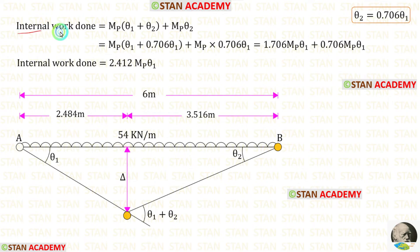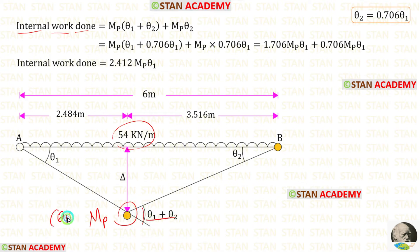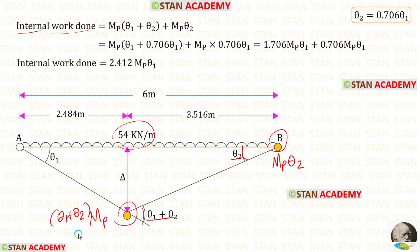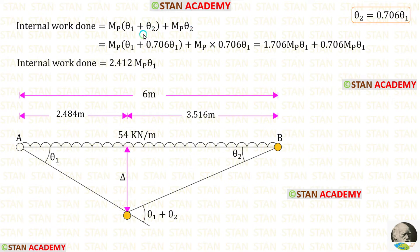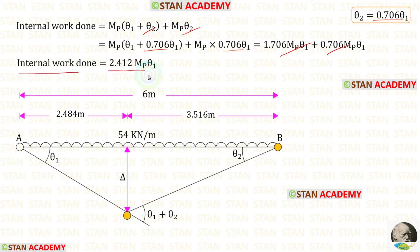Now let us find the internal work done. Under the load we have a plastic hinge, so we multiply Mp (MB) by the angle theta1 plus theta2. At point B we also have a plastic hinge, so we multiply MB by theta2. Adding both and substituting theta2 = 0.706 theta1, the internal work done equals 2.412 MB theta1.